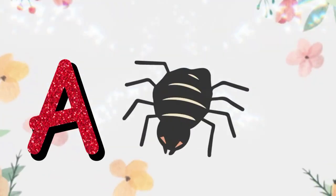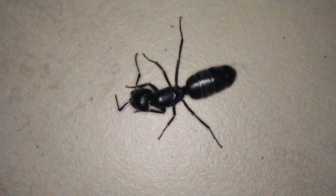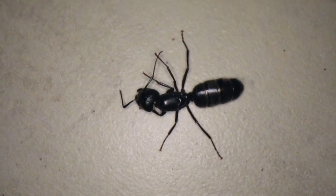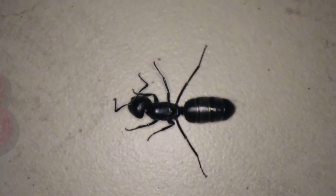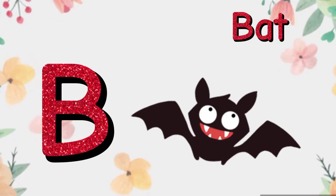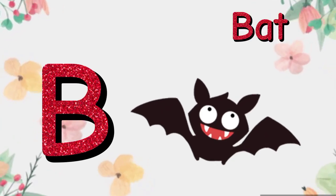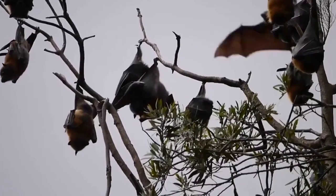A is for Ant. a-a-a-ant. A is for Ant. B is for Bat. b-b-bat. B is for Bat.